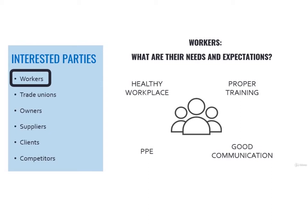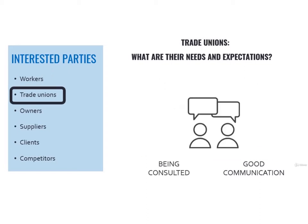Every time these requests are explicit, we can think of needs. In some of these cases, the expectations are more implicit. Trade unions — what are their needs and expectations? They can influence OHS through their demands and their cooperation. They probably want to be heard, and they want to be consulted every time there is a choice to be taken that could have any repercussion to OHS.